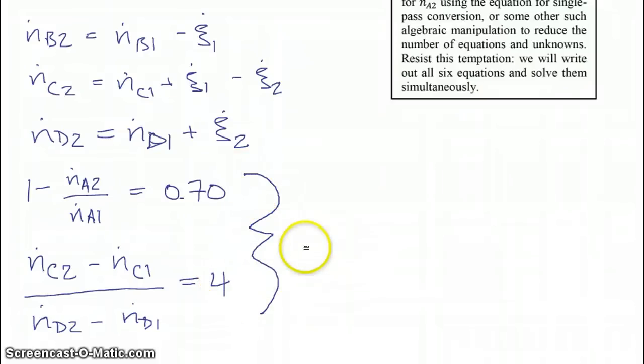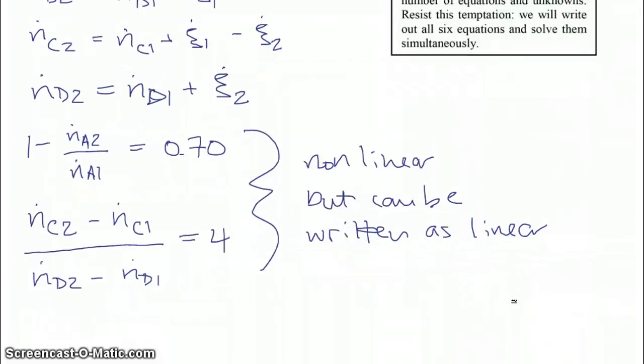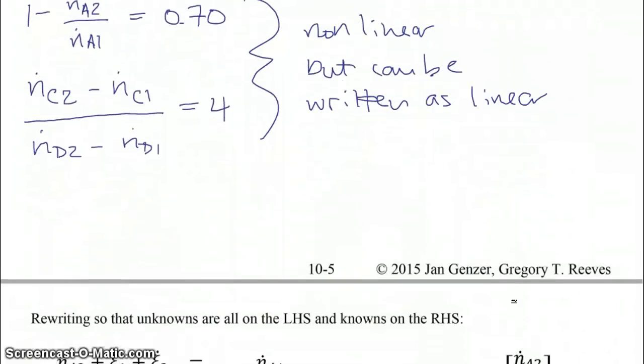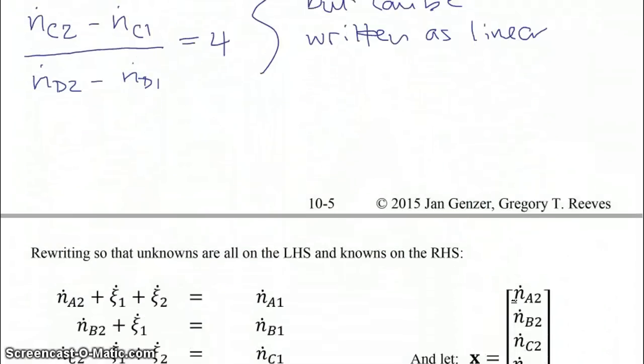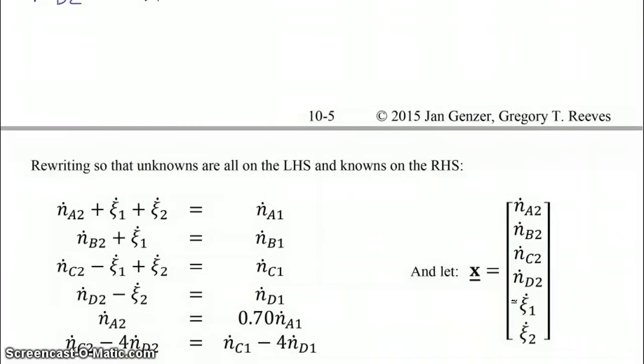Now note that I said they were linear equations. These two equations are non-linear, but they can be rewritten as linear. So we can rewrite these unknowns, or these equations, as linear.